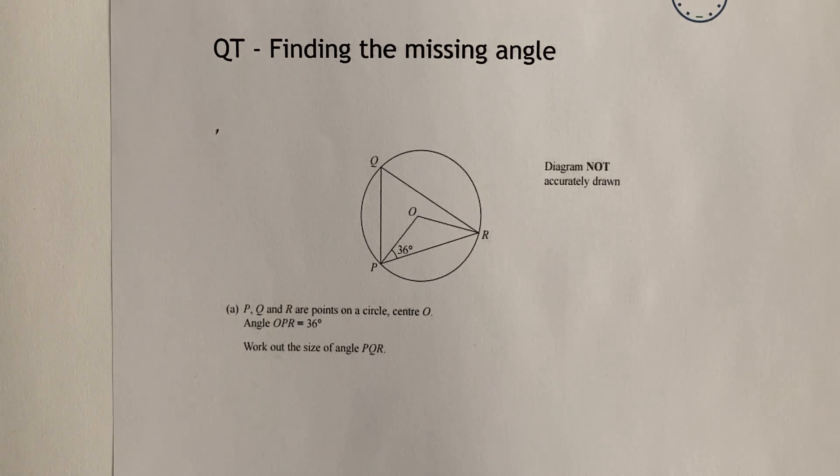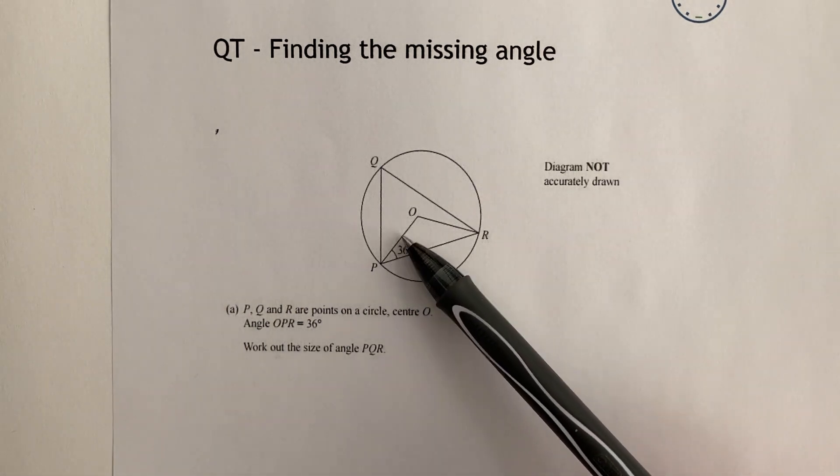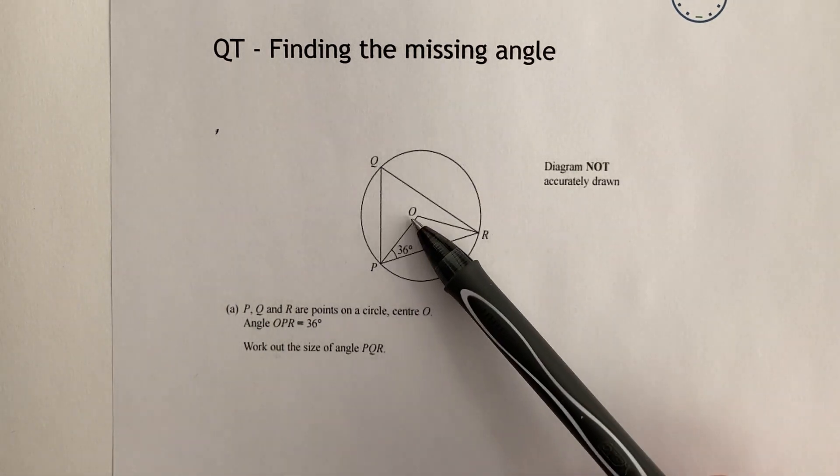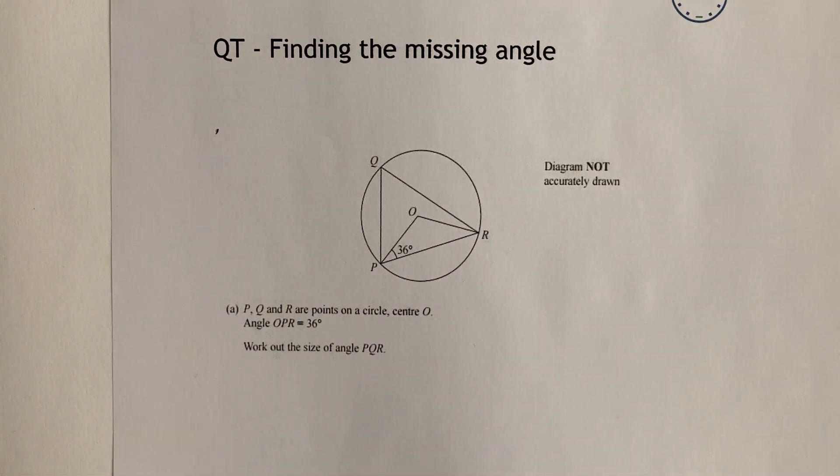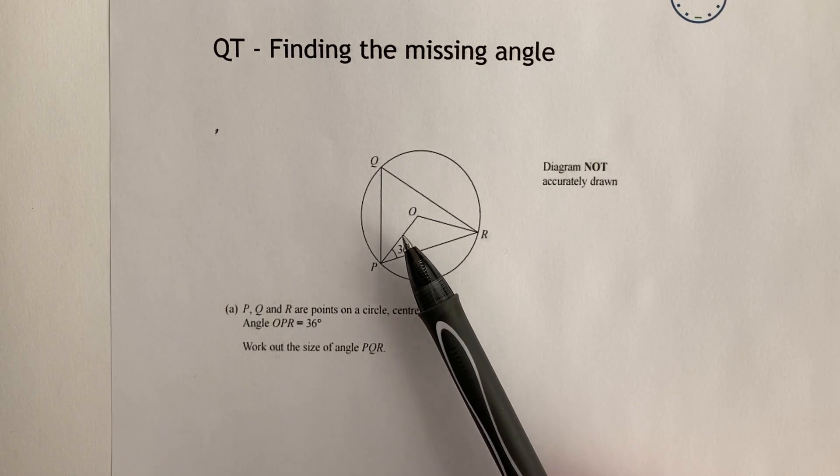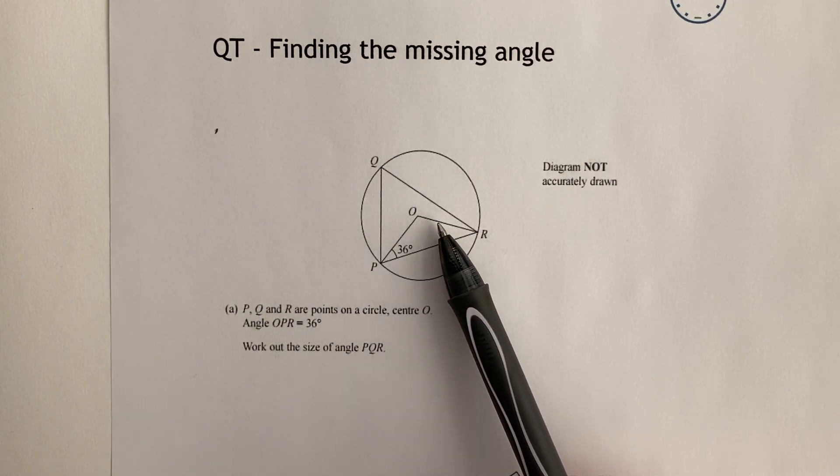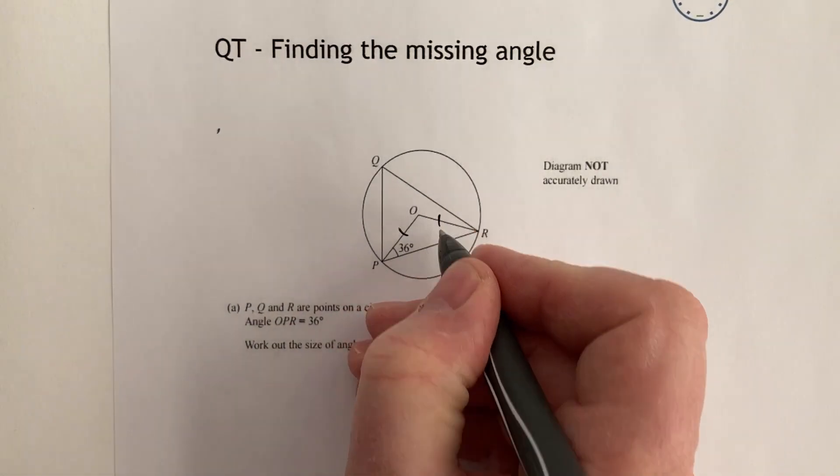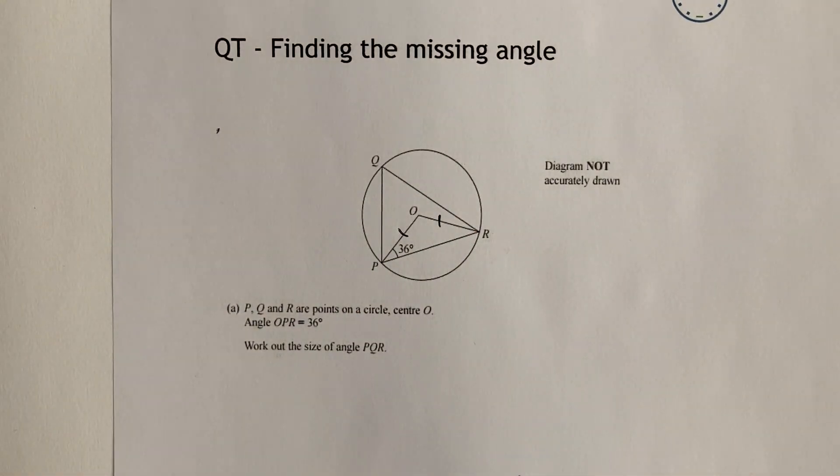So with this one, the first one we need to know circle theorems and also we need to recognize that this triangle right in the middle here is an isosceles triangle. Now the reason that is is because O is at the center, so therefore this is a radius OP and OR is also a radius, so we can actually say those two are the same and therefore it's an isosceles triangle.